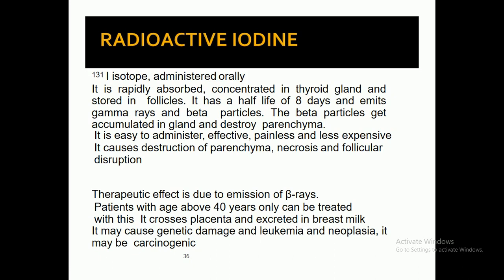Radioactive iodine is administered orally, rapidly absorbed, and concentrated in the thyroid gland where it is stored in the follicles. It has a half-life of about eight days, emitting gamma rays and beta particles. The beta particles accumulate in the gland and destroy the parenchyma. It is easy to administer, effective, painless, and less expensive. It causes parenchymal necrosis and follicular disruption. The therapeutic effect is due to beta ray emission. Only patients above 40 years are treated with it. It can cross the placenta and is excreted in breast milk, and may cause genetic damage, leukemia, and is potentially carcinogenic.